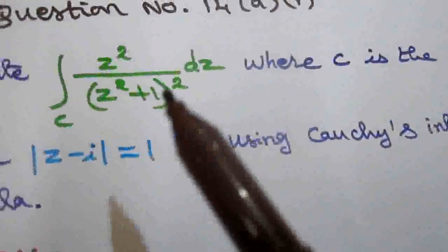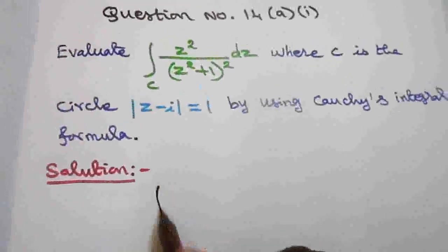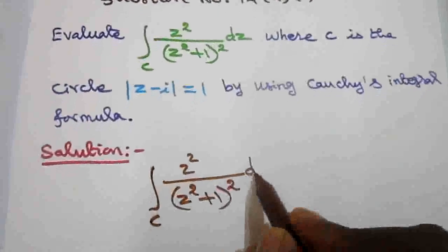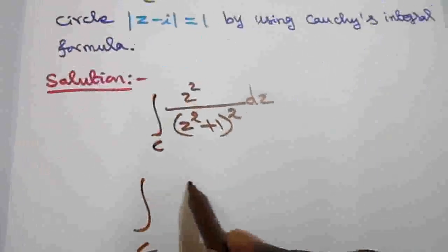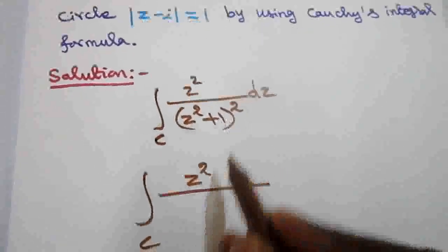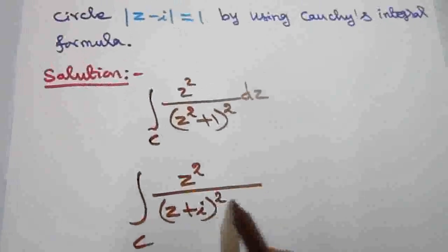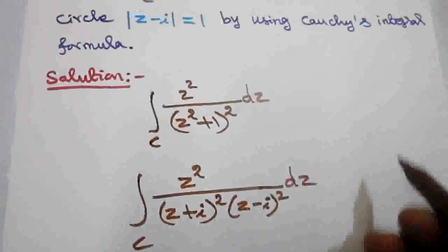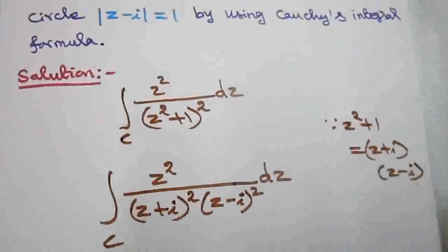In this problem the denominator is power 2, so we use 1 factorial and the 1st derivative. The given integral is integral over c of z squared by (z squared plus 1) squared dz. Since z squared plus 1 equals (z plus i)(z minus i), both terms raised to power 2, this becomes integral over c of z squared by (z plus i) squared times (z minus i) squared dz.